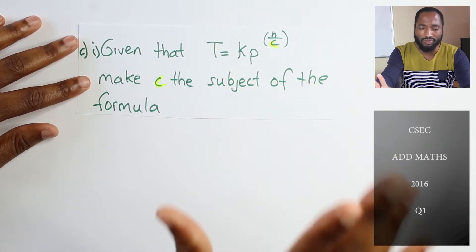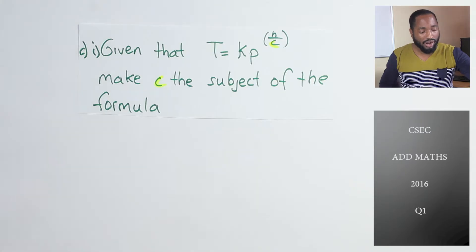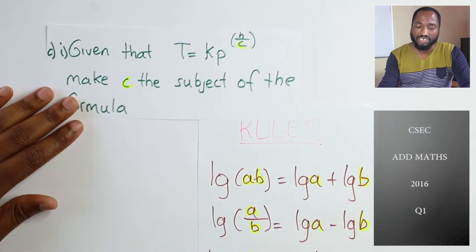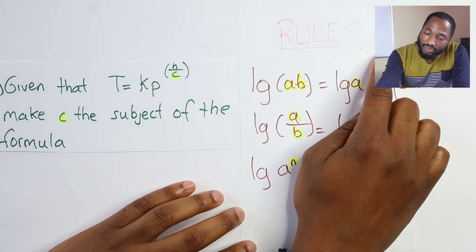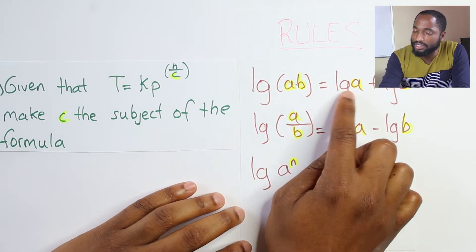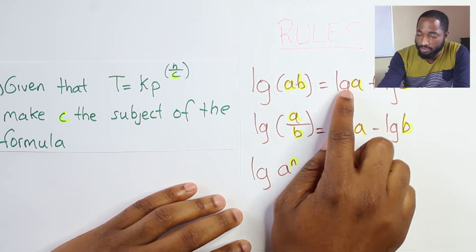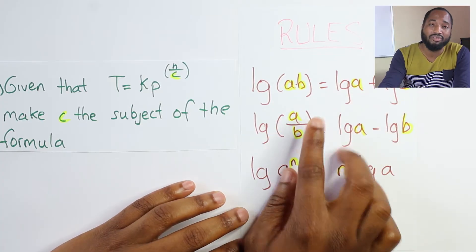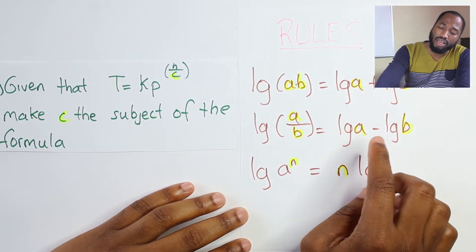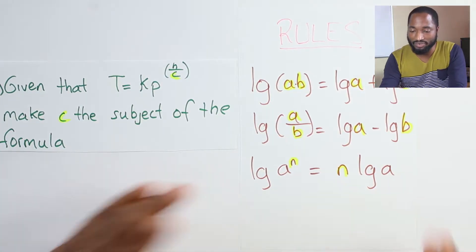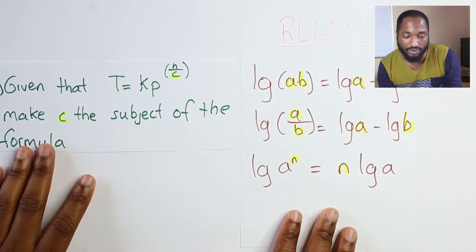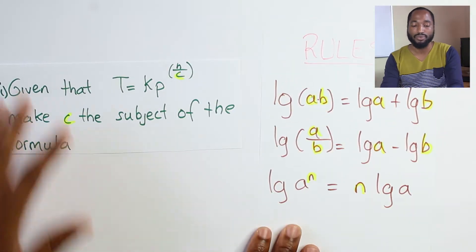This question is beautiful because you'll have to use some of the rules here: log(ab) = log(a) + log(b), log(a/b) = log(a) - log(b), log(a^n) = n·log(a). Some exciting rules we're going to get to use here just to solve this question. Keep in mind these rules, let's see how this goes.